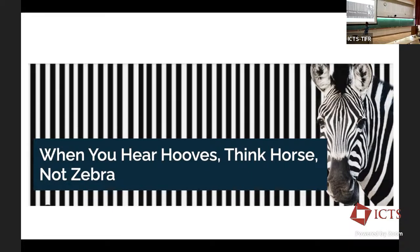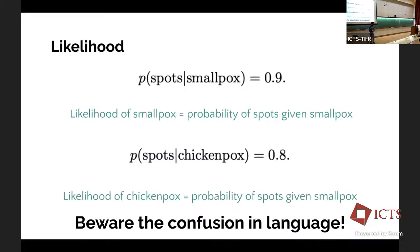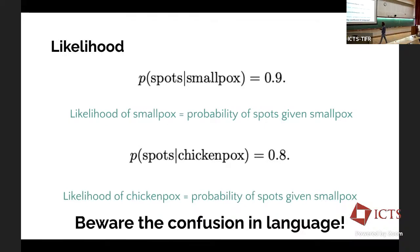But Bayes rule also tells you that when you hear hooves, think horses, not zebras. What is more prevalent — horses or zebras? Horses are prevalent. The crucial part of the equation that is missing is the prevalence, or what is called the prior probability, of chickenpox and smallpox. Let's first discuss likelihood. This side of the equation — spots given smallpox — is pronounced as the conditional probability, and this bar means 'given.' Spots given smallpox at 90% is called the likelihood of smallpox. Please be aware of the confusion in language: it's spots given smallpox, but it is called likelihood of smallpox.